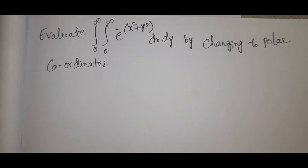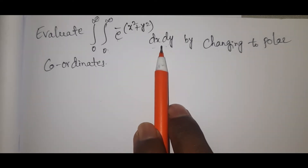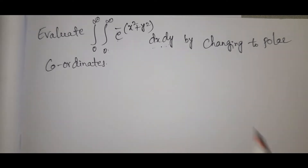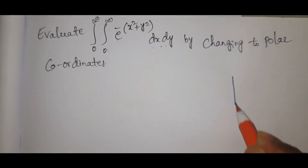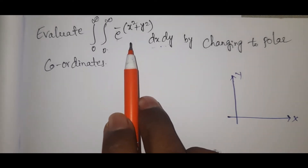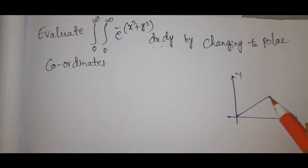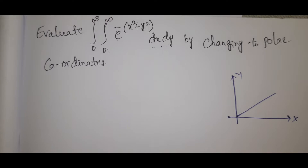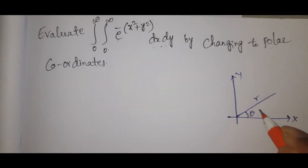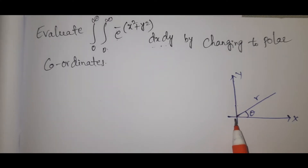Changing into polar coordinates. This is the x-axis and this is the y-axis. The circle equation at the origin is x square plus y square equals r square. This is the radius r square. This is theta. The angle theta equals 0 to pi by 2, and r equals 0 to infinity.